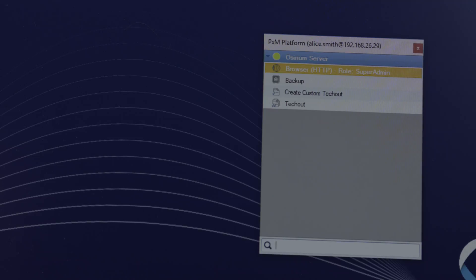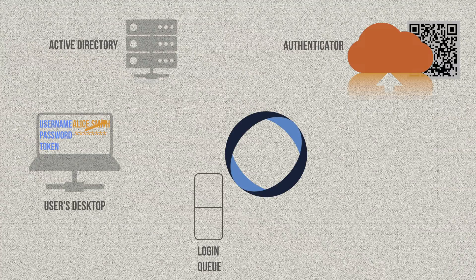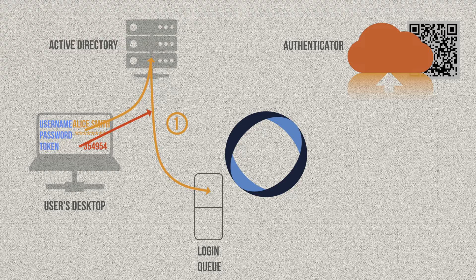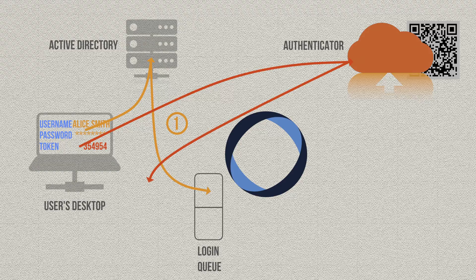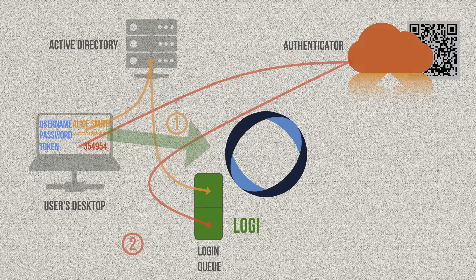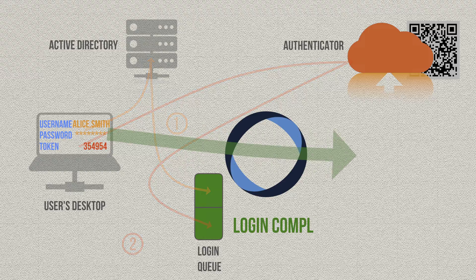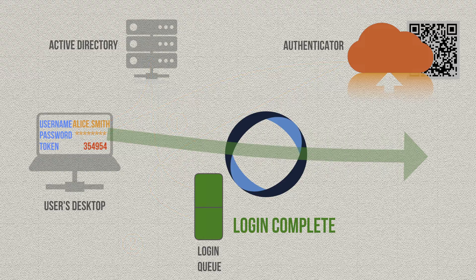Alice is ready to work. Step by step, this is what happened: the username and password were sent to Active Directory and confirmed as valid credentials. The user is then held in a queue for login. The username and token code are sent to the RADIUS server, and when the success message returns, the user queue is processed and Alice is logged in.